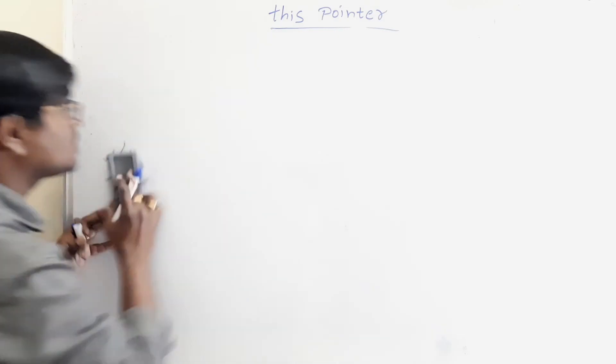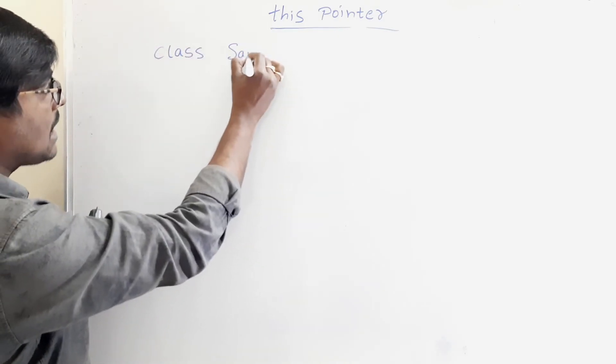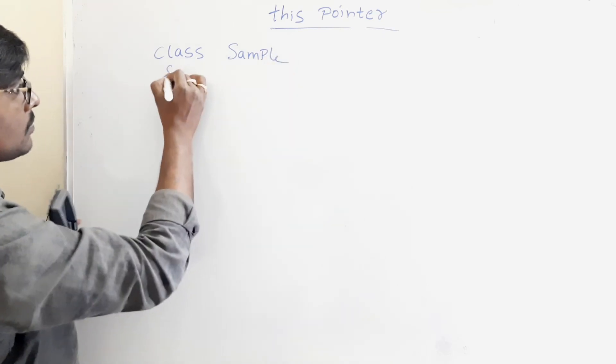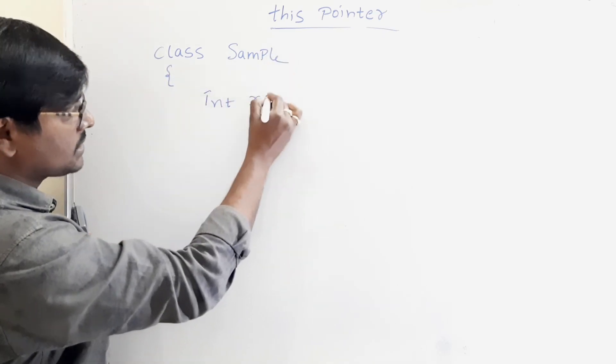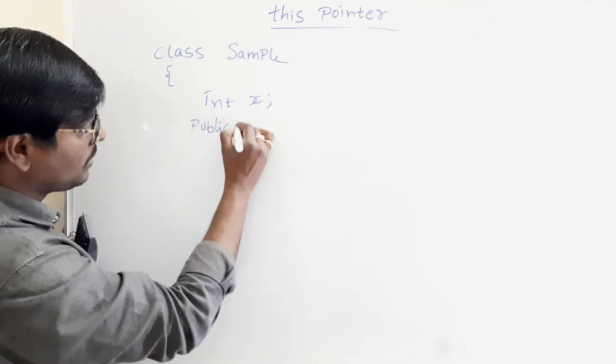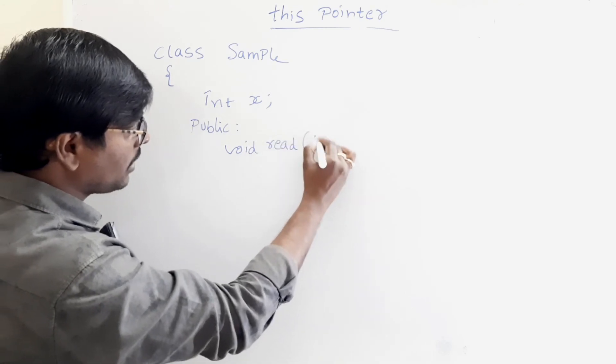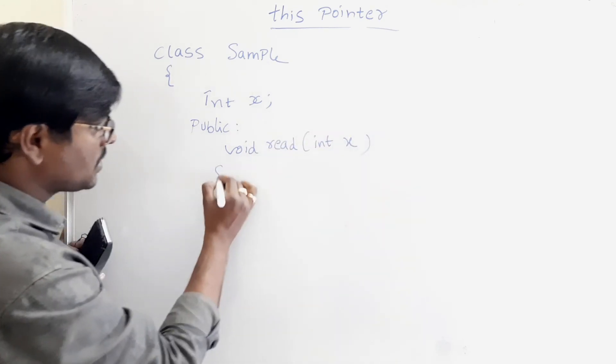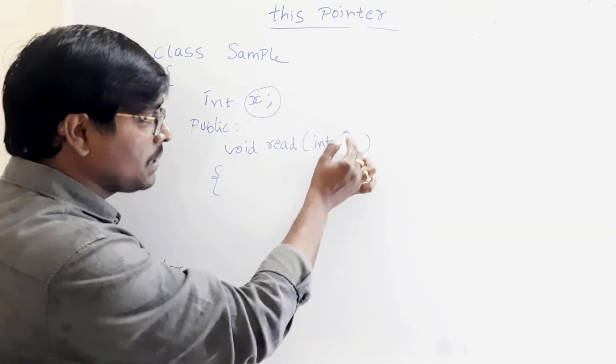So consider an example, a simple example. Class sample, int x. Suppose, public void read of int x. Observe, here this is the local variable name. This is the parameter.